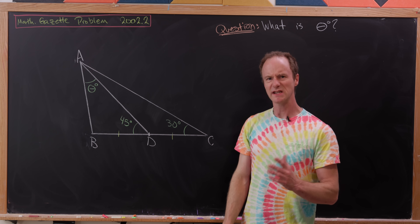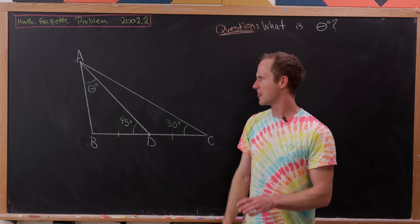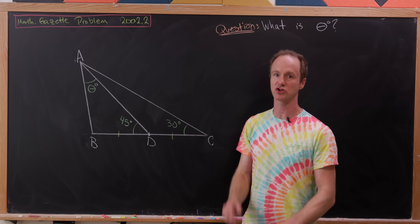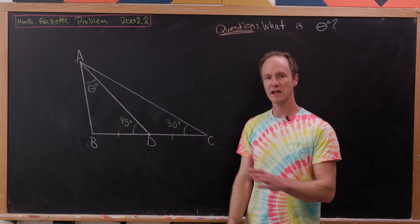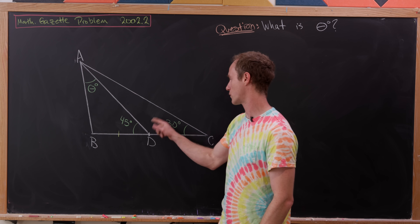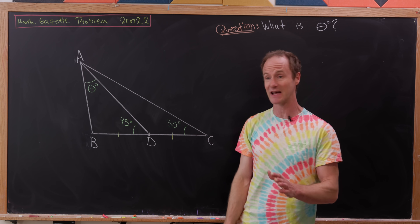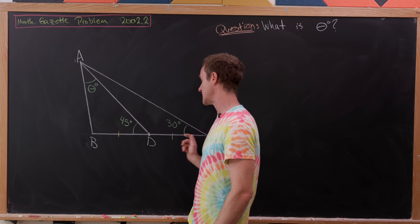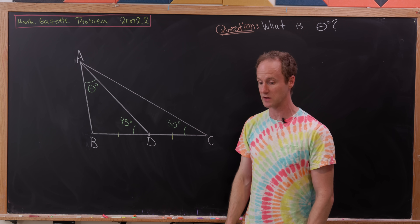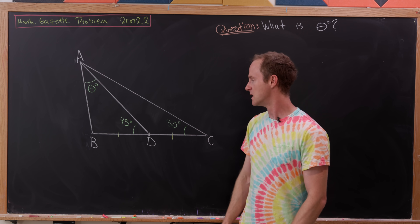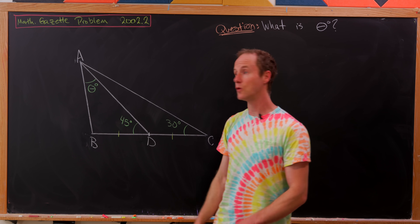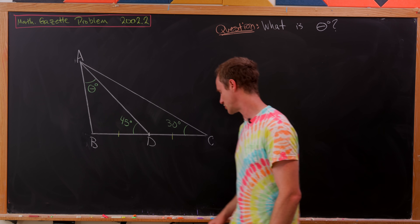A logical first step is to try to get a right triangle into this situation. As drawn — I actually used a protractor to get these pretty close to 45 and 30 degrees — angle ABC (or ABD) is not 90 degrees. So we don't have a right triangle yet. We'll extend line segment CB until we can drop a perpendicular from A.